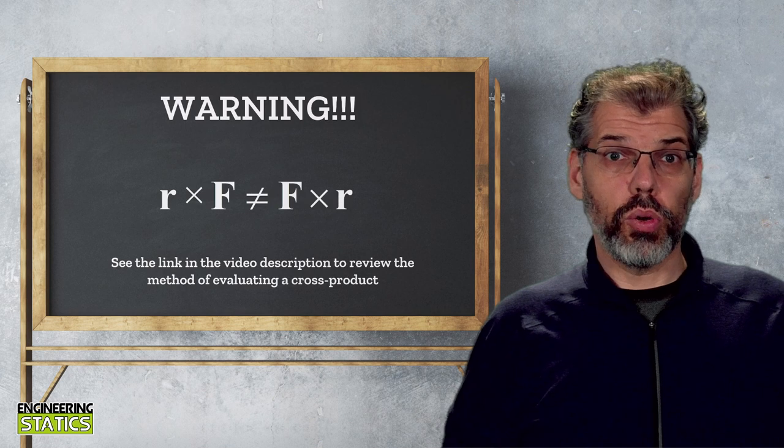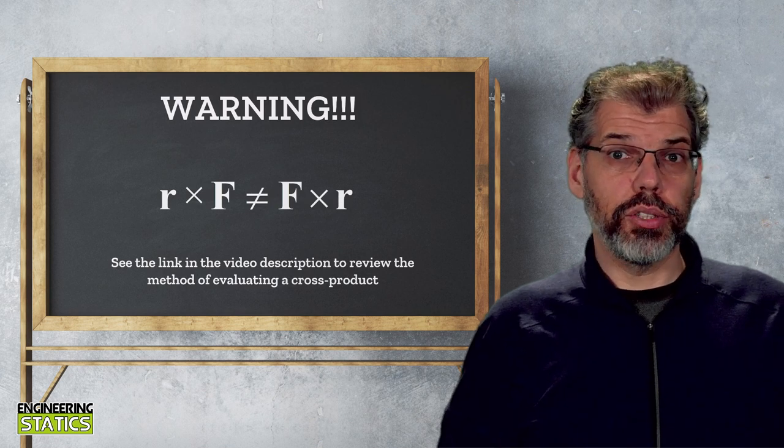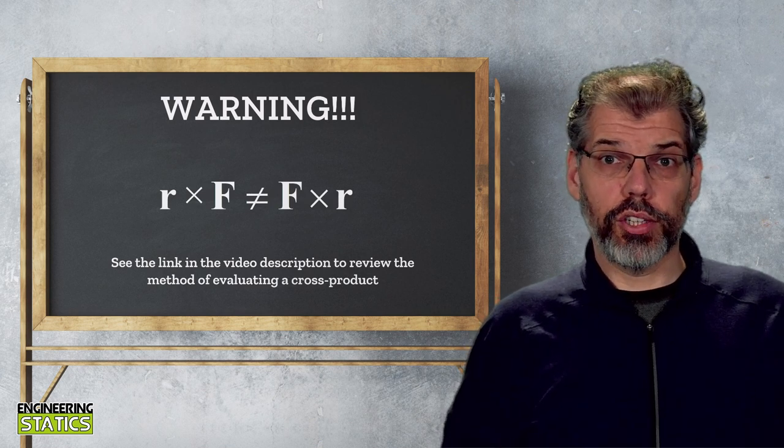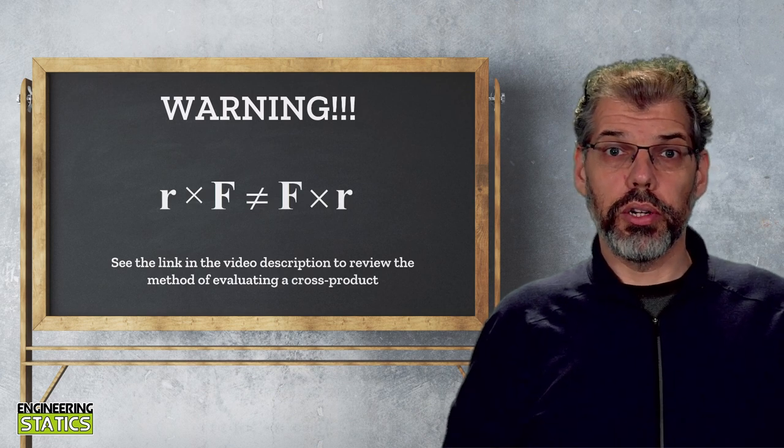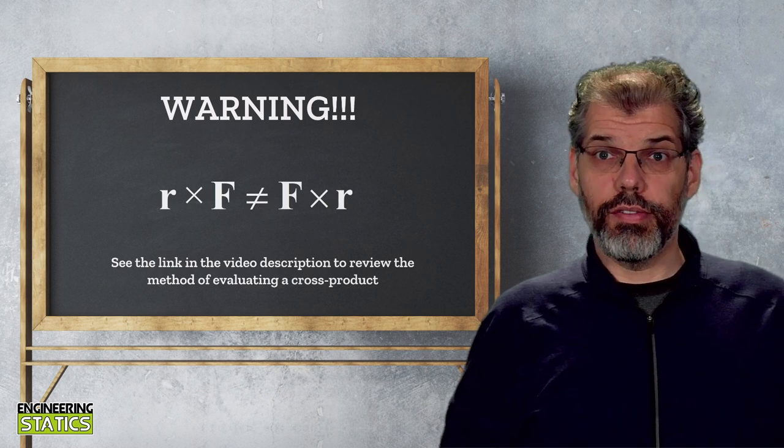The resulting vector from these two cross products will have the same magnitude, but they will have different directions. You can visualize this with the right-hand rule we described earlier by swapping the role of f and r.